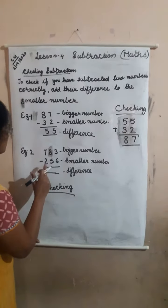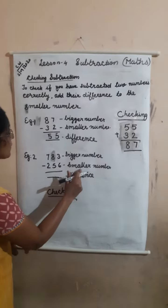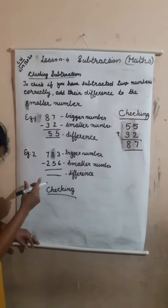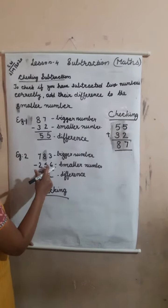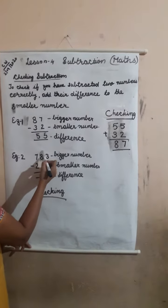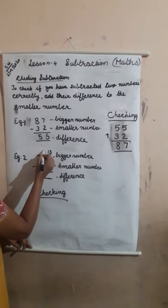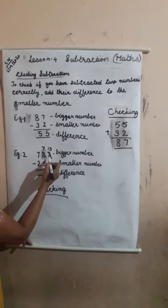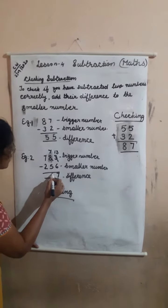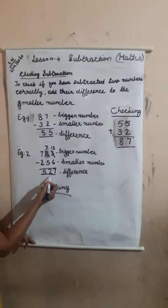783 minus 256. 783 is the bigger number, 256 is the smaller number. Now find the difference. First subtract the ones. 6 is bigger than 3, so take 1 from the tens column and make it 13. Then 8 becomes 7. 13 minus 6 is equal to 7. 7 minus 5 is equal to 2. 7 minus 2 is equal to 5. Our difference is 527.